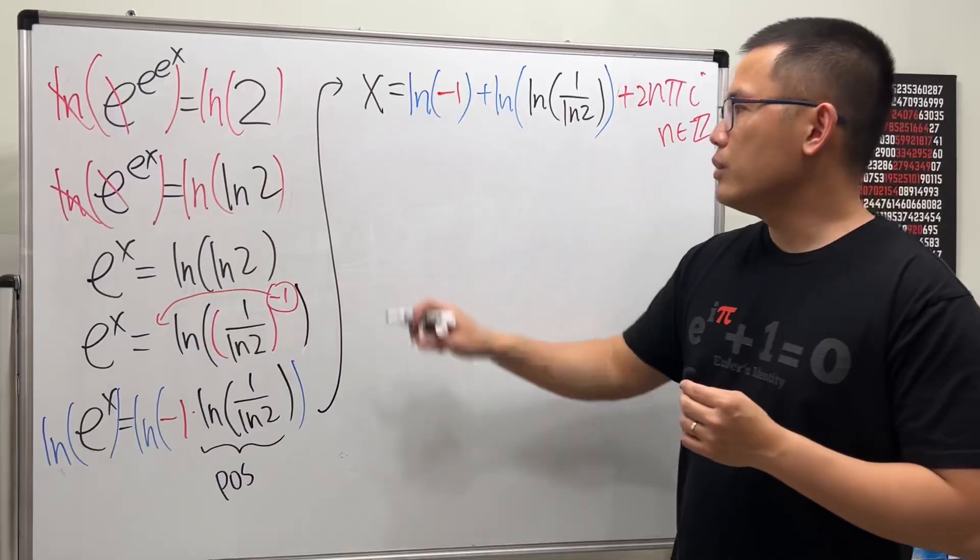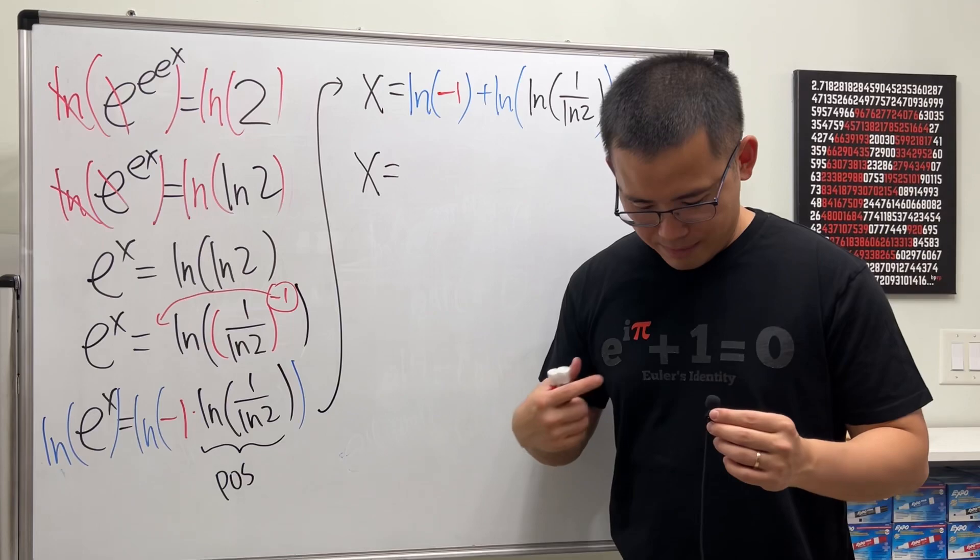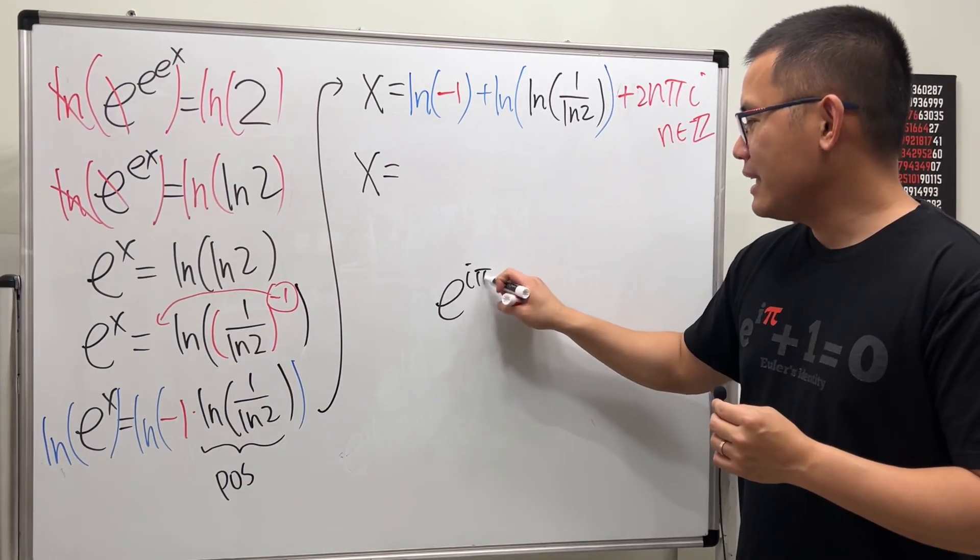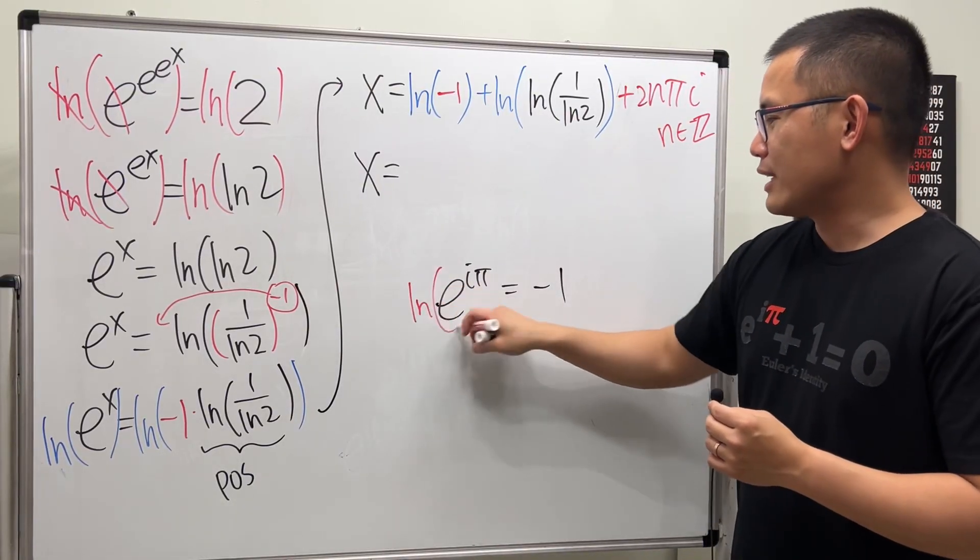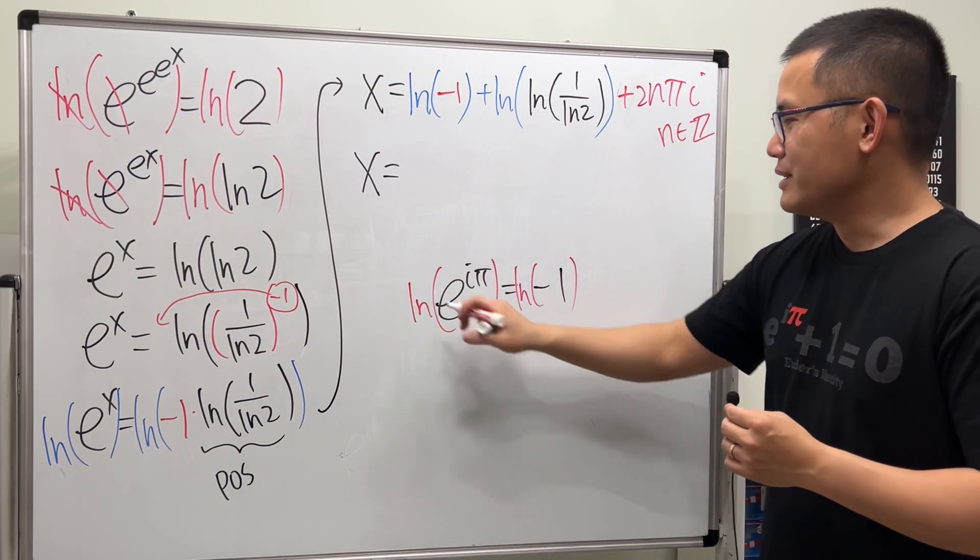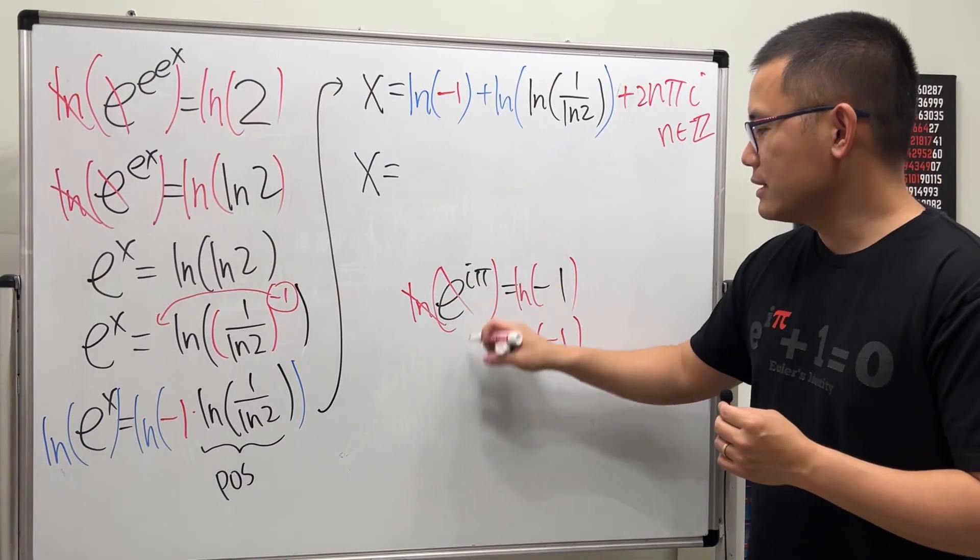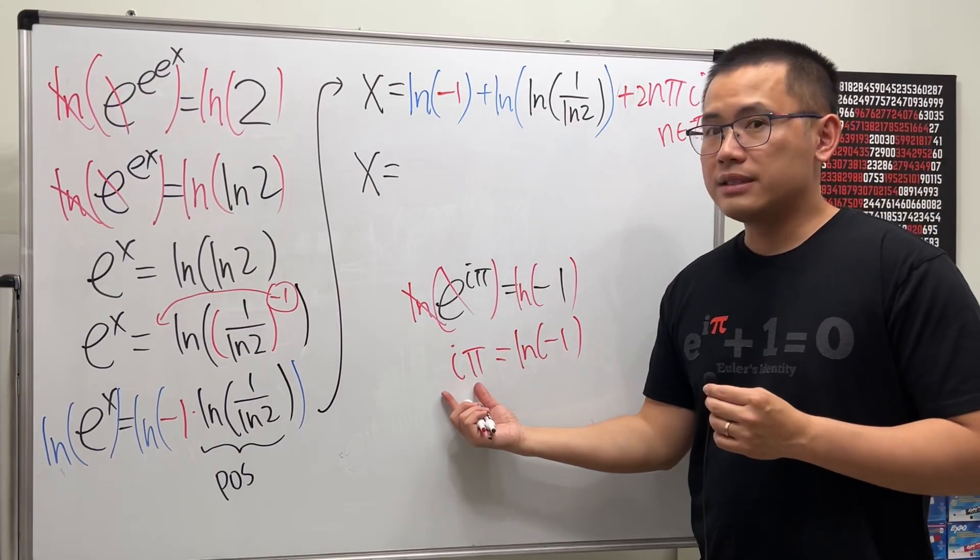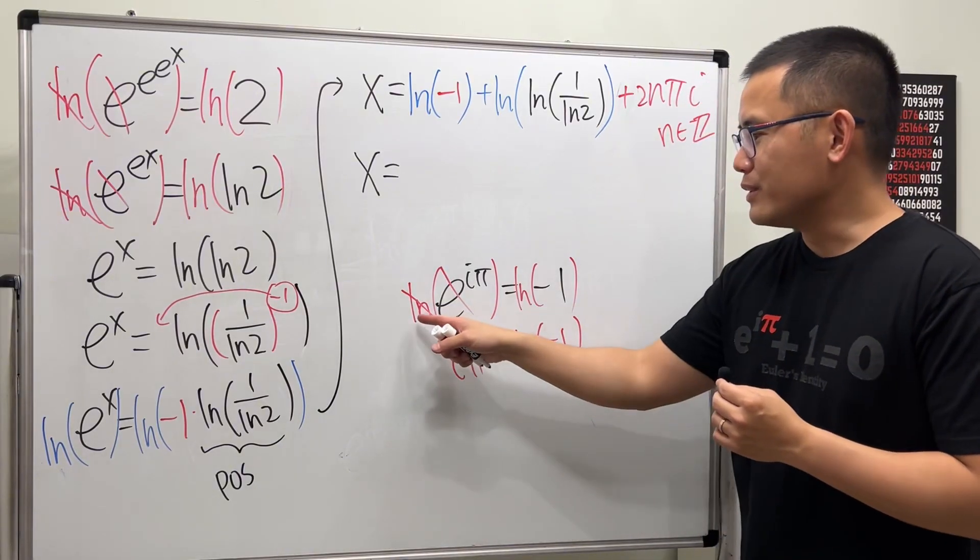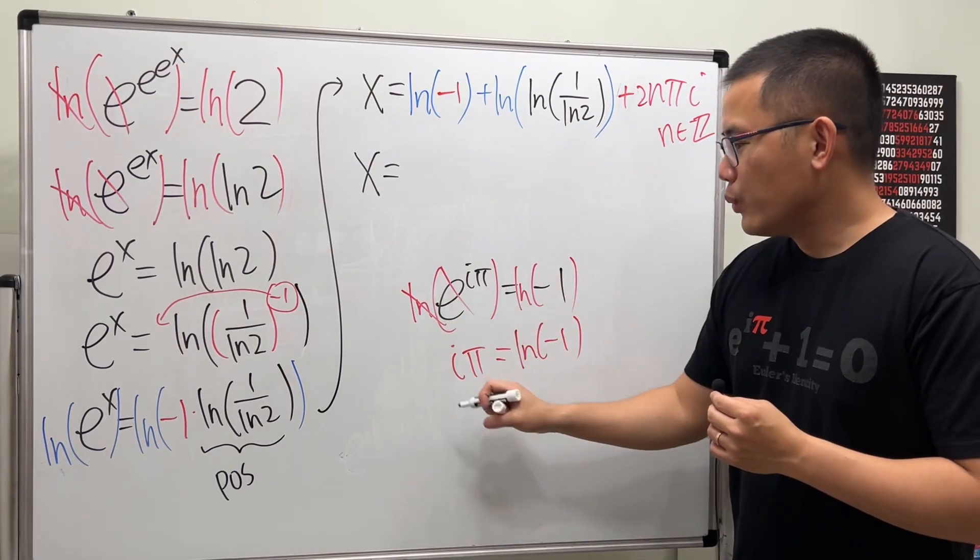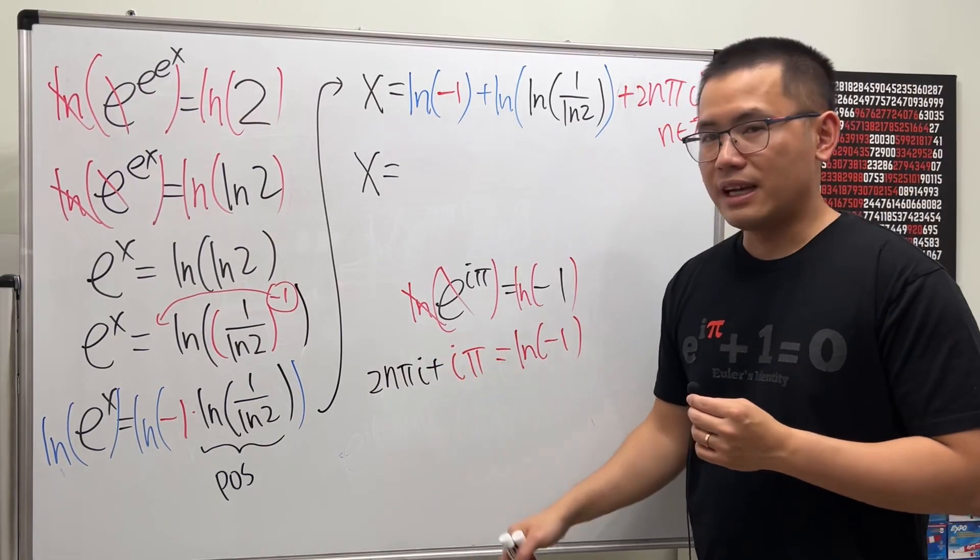Now, we can continue. e^(iπ) is equal to, put the 1 to the other side, we get negative 1. Just imagine we take the natural log on both sides. You see this and that cancel. So, we get ln of negative 1 equals iπ. And this right here is the principal value for ln of negative 1. But you know, whenever you take the natural log on both sides, we will have to attach 2nπi on one of the sides. That's it right here.